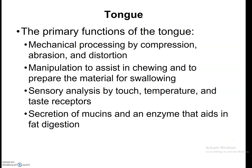The functions of the tongue include helping you move food around inside your mouth so that you can mechanically tear food apart before you swallow it. The tongue allows you to compress, abrade, and distort the food — think of making bubbles with bubble gum. It helps you swallow food by pushing it back to the pharynx. It also helps you analyze what you put in your mouth via touch: texture, temperature, and of course taste receptors, which are chemoreceptors.